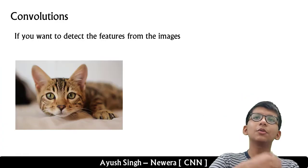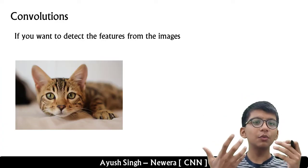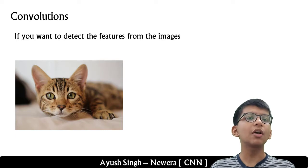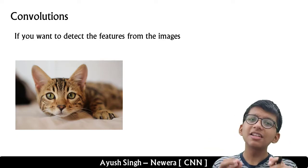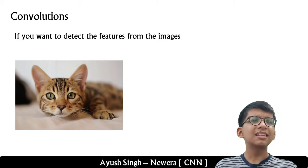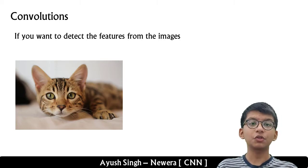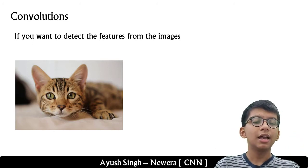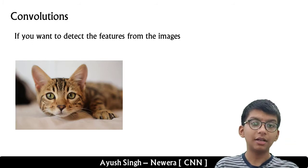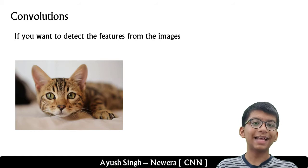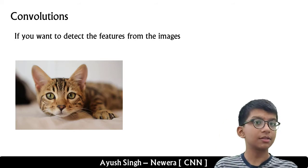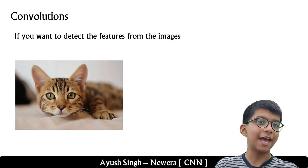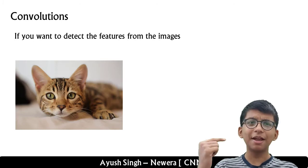First, I want to answer the question: why do we use CNN instead of an Artificial Neural Network for training on images? I'll answer this at the end, because if I answer it now, I'll be using technical terms like padding and pooling that you don't know yet. It's also a very good interview question, so we'll return to it after covering all the CNN terminology.